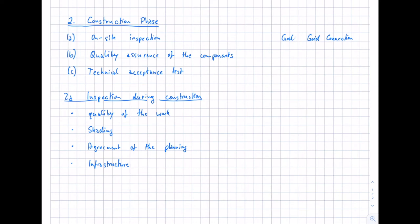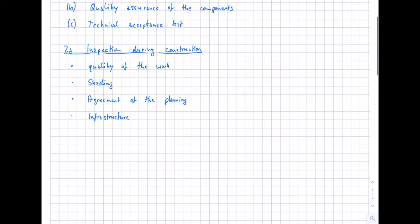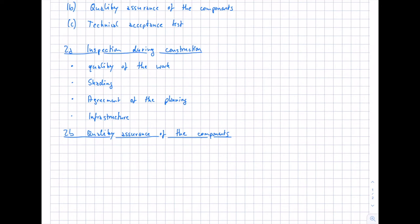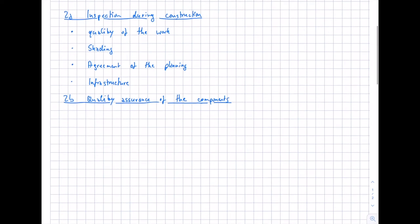The technical expert controls the EPC — the company responsible for engineering, procurement, and construction — to ensure a high-quality PV system after grid connection. The second task is quality assurance of the components, mainly the PV modules, which contribute about 40 percent of the overall costs of a PV project.